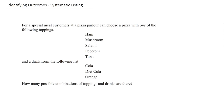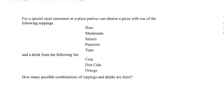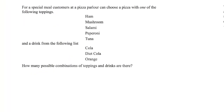In this video we're going to have a look at some systematic listing and why this might be a good idea to know about for probability questions. Let's start off with an example and perhaps we could extend this example to think about probability as well. For a special meal, customers at a pizza parlour can choose a pizza with one of the following toppings, a selection of five things, and a drink from a selection of three. How many possible combinations of toppings and drinks are there? We'll start by thinking of a way to write them all out in a very calm, systematic way.